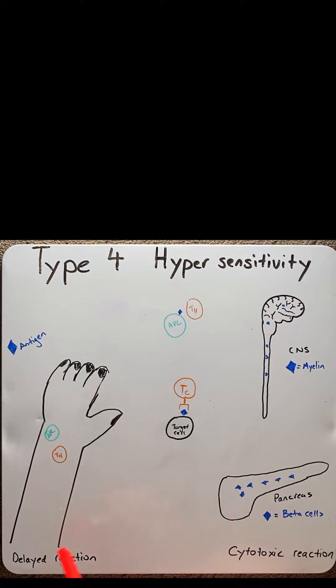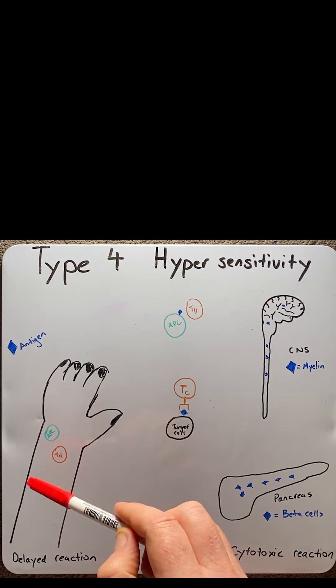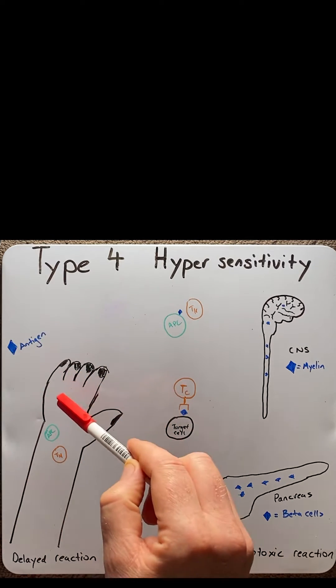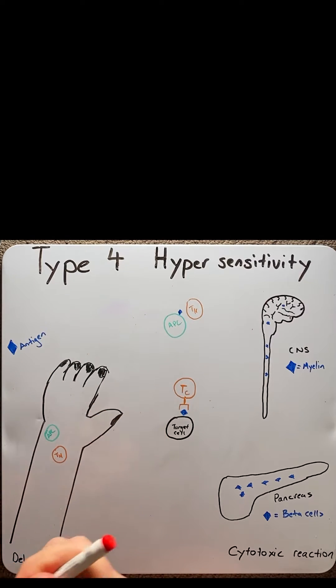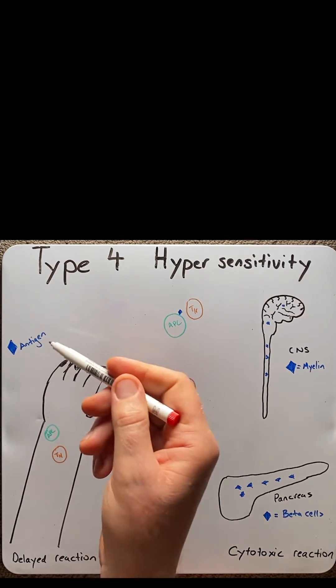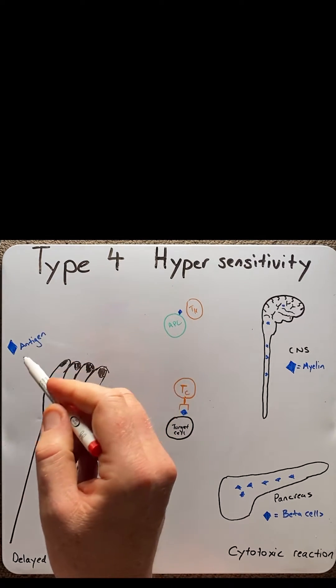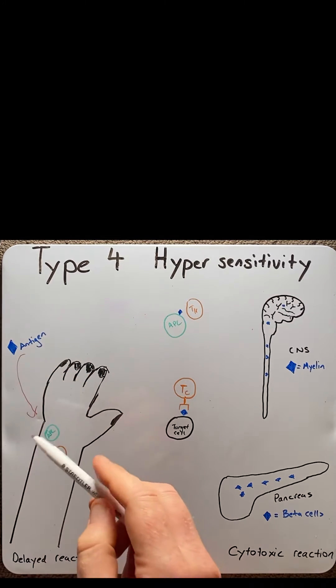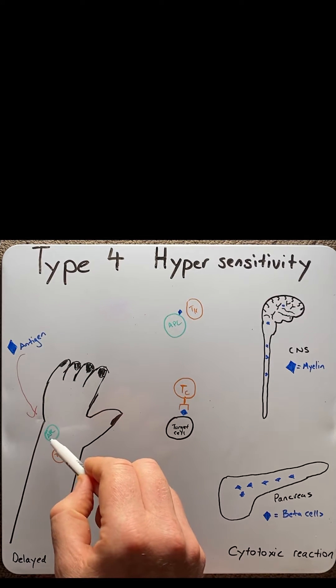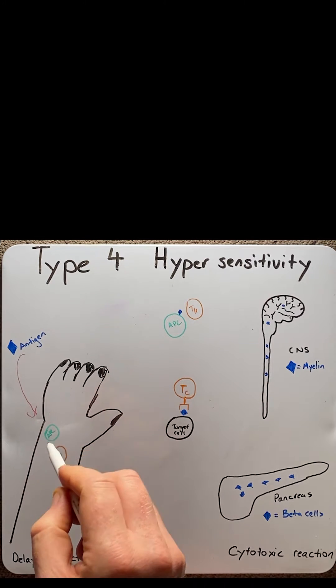Now, let's start with a delayed reaction. This usually involves the skin only and where we have the antigen that enters. Some examples of the antigens can be latex, can be metals like nickel, or certain cosmetics. When the antigen enters the skin, it is taken up by antigen-presenting cells, such as a dendritic cell, which then engulfs it.